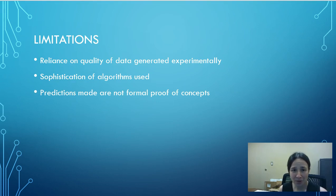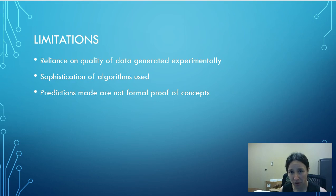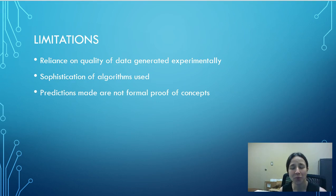Bioinformatics just makes predictions, and because of that any outcome from bioinformatic approaches is not considered formal proof of concept. They're great for predictions, but we need some sort of a real-world analog — a bench laboratory experiment, for example — to prove that what we have in the computer realm is true for what we see in the real world.